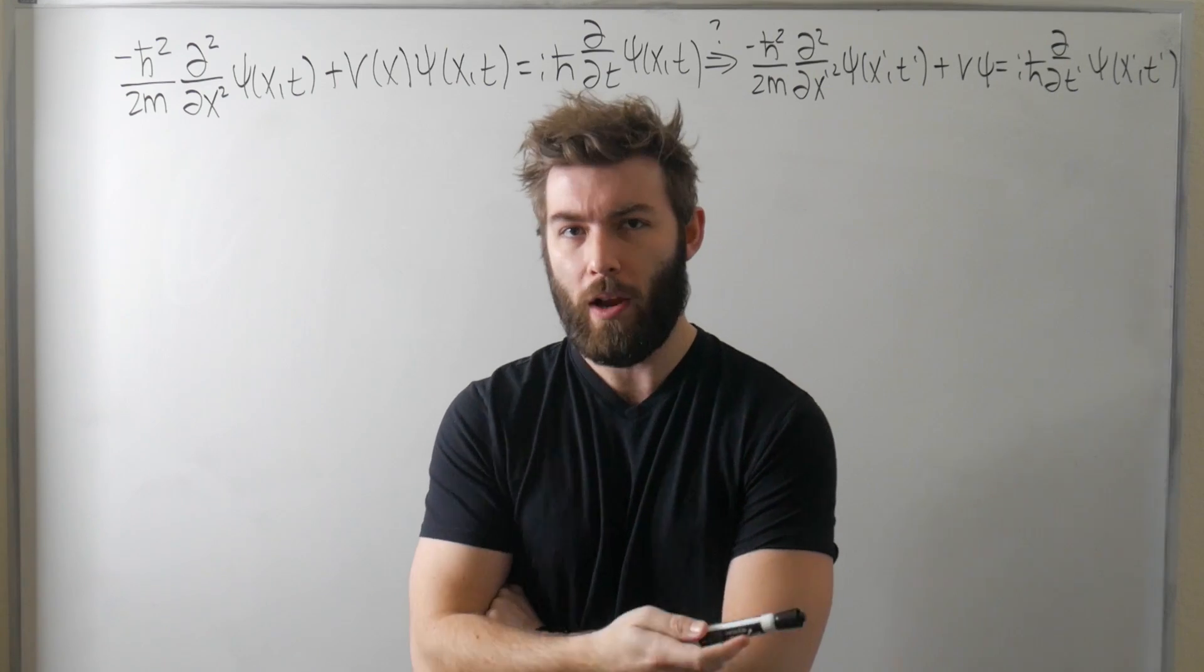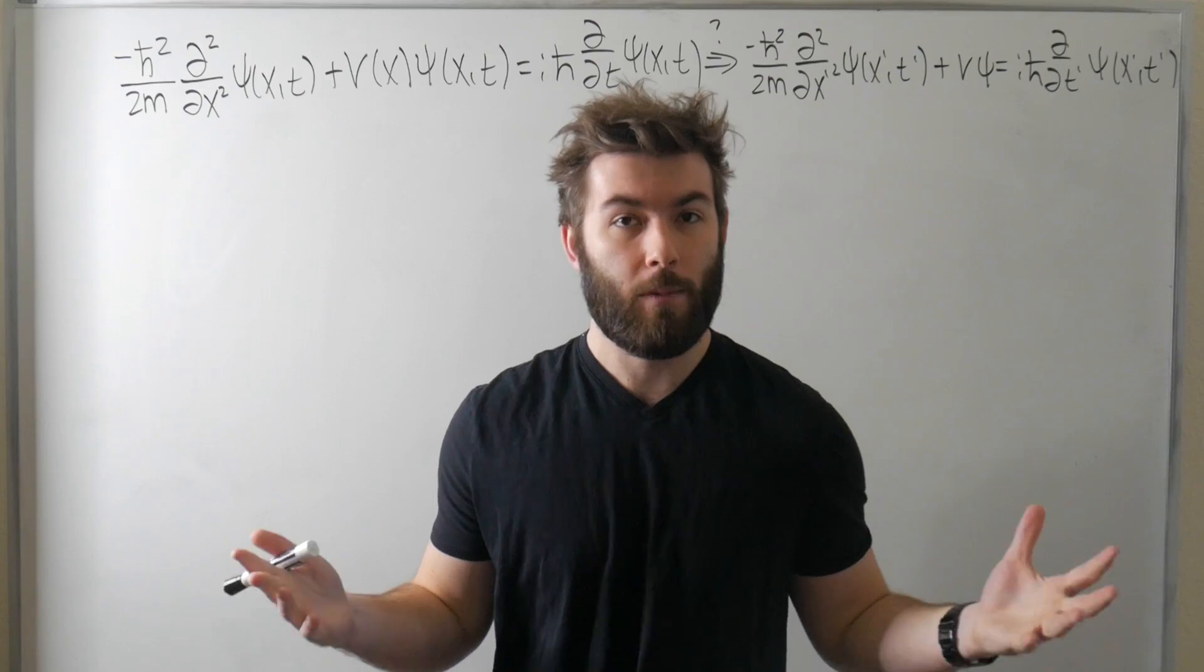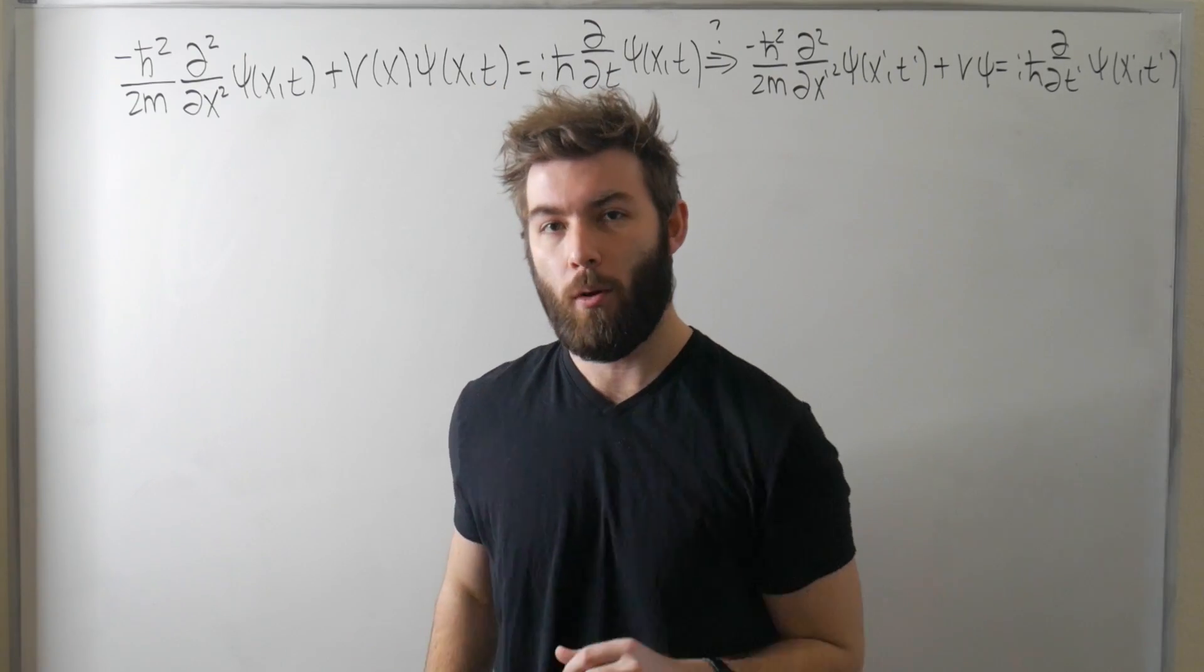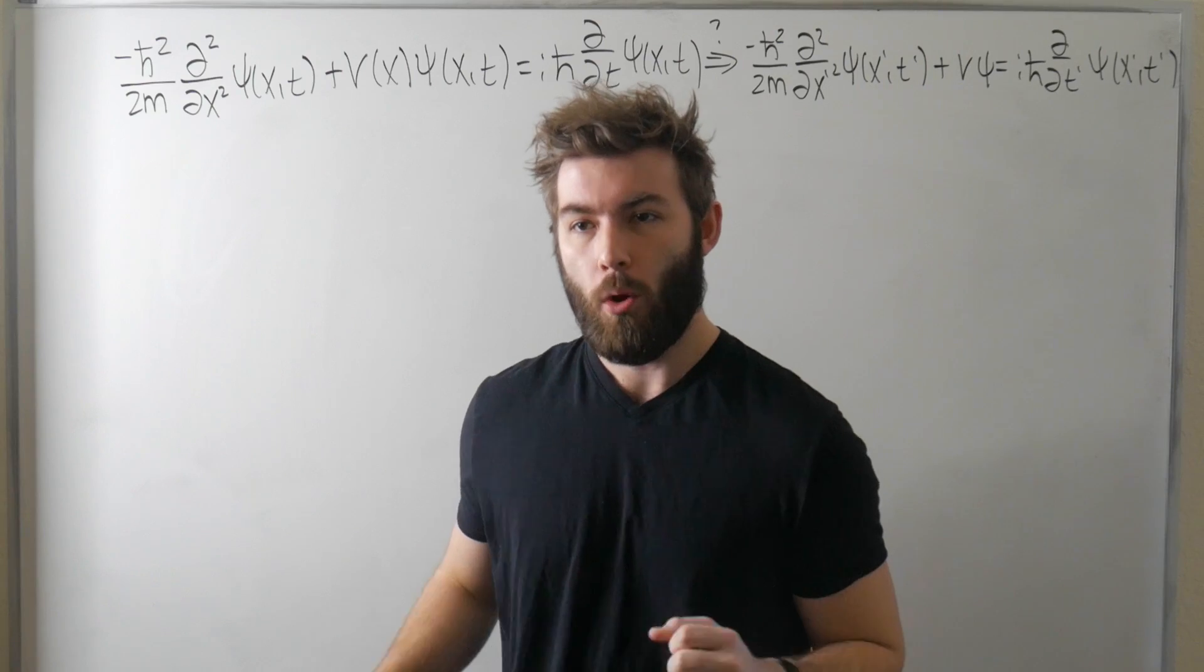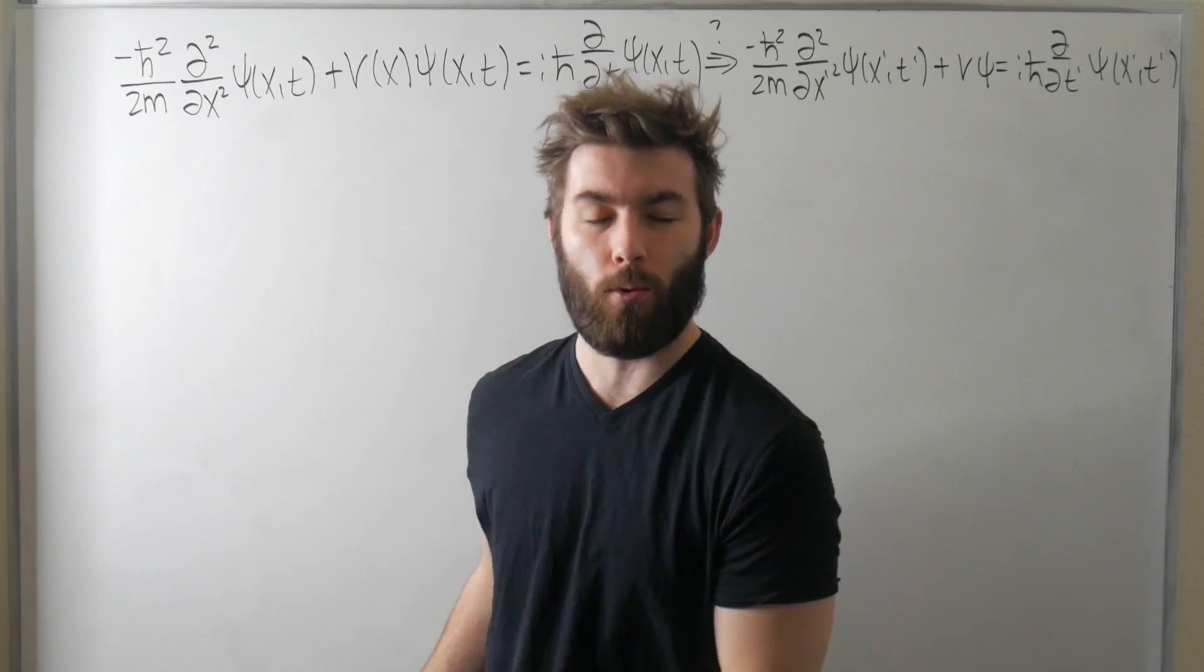At that time, general relativity had been around for 10 years, special relativity for 20 years. So relativity had been around upwards of 20 years, an entire generation of people knowing the dynamics of charged particles. Why would Schrödinger waste his time coming up with a theory of quantum mechanics that doesn't account for it?